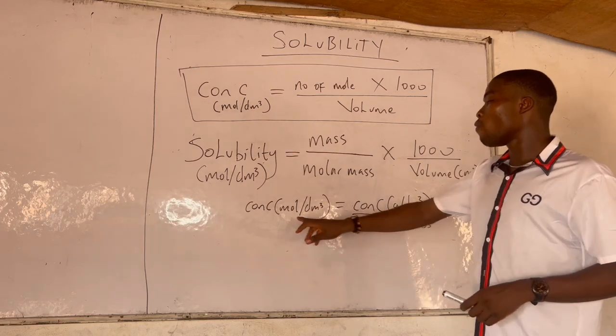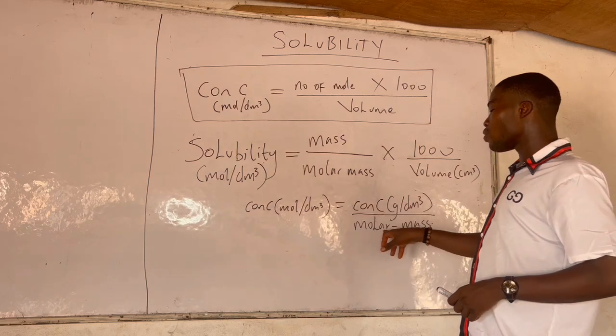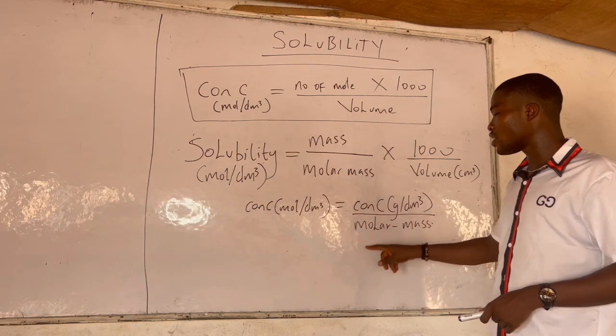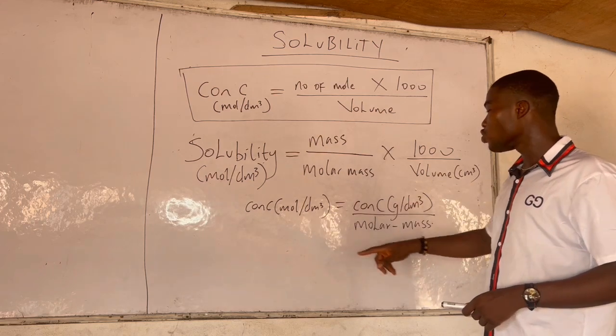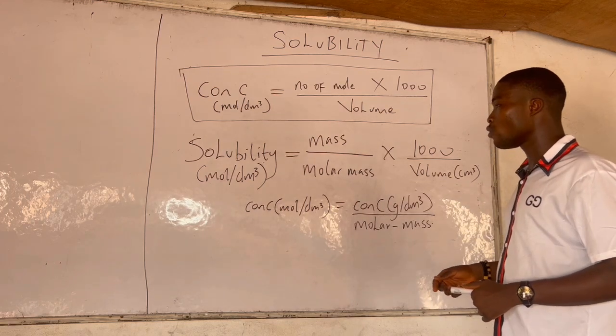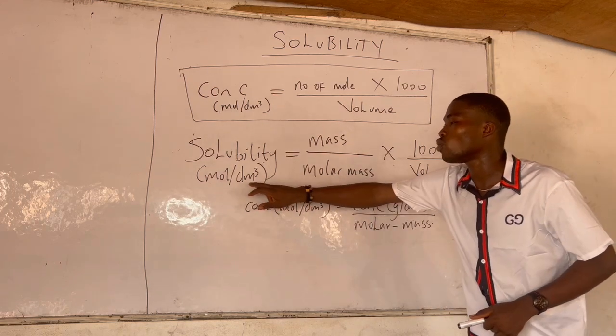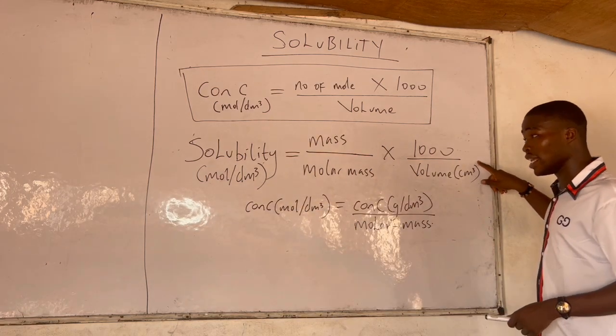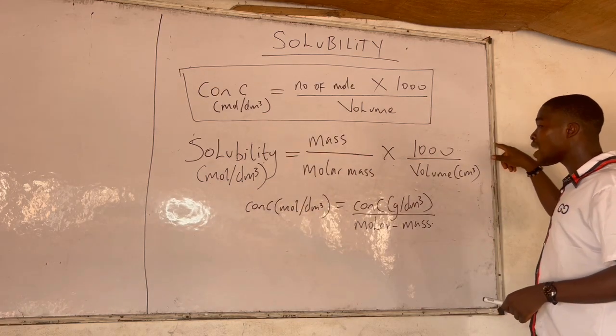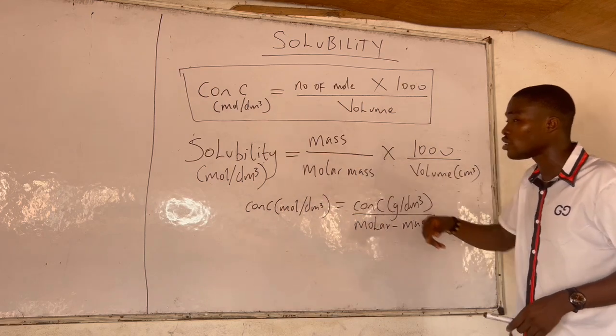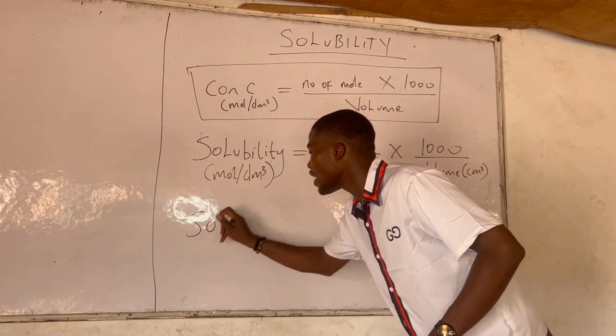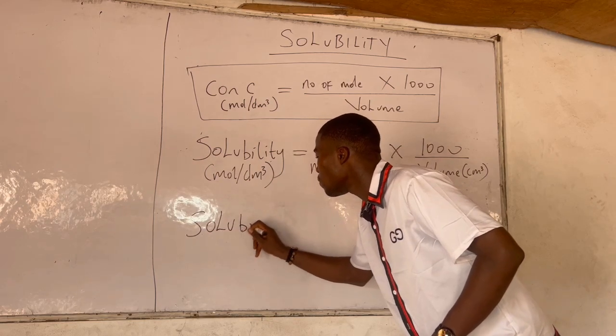Therefore mole per dm³ times molar mass is gram per dm³. So just take molar mass over there you get gram per dm³. So if I'm to convert this to gram per dm³ I will just multiply it with molar mass, so molar mass cancels this molar mass.